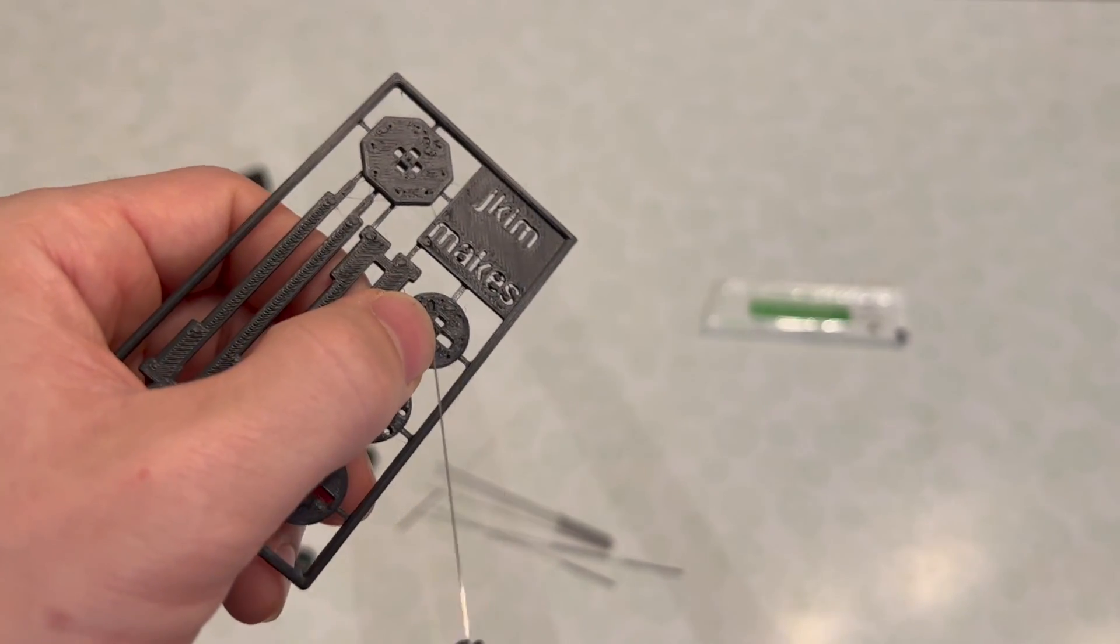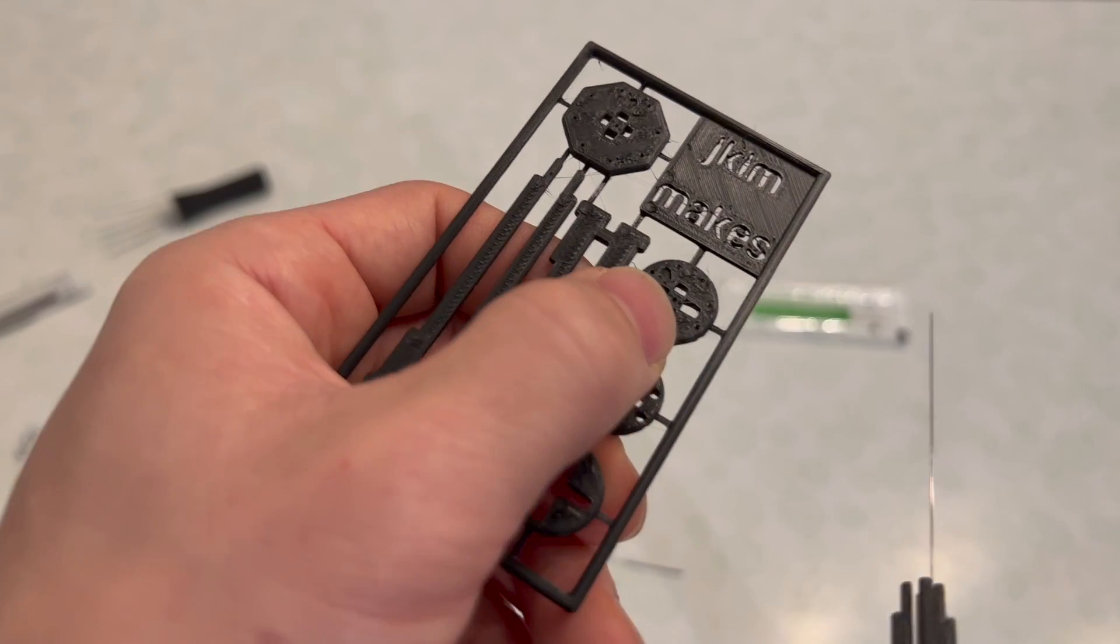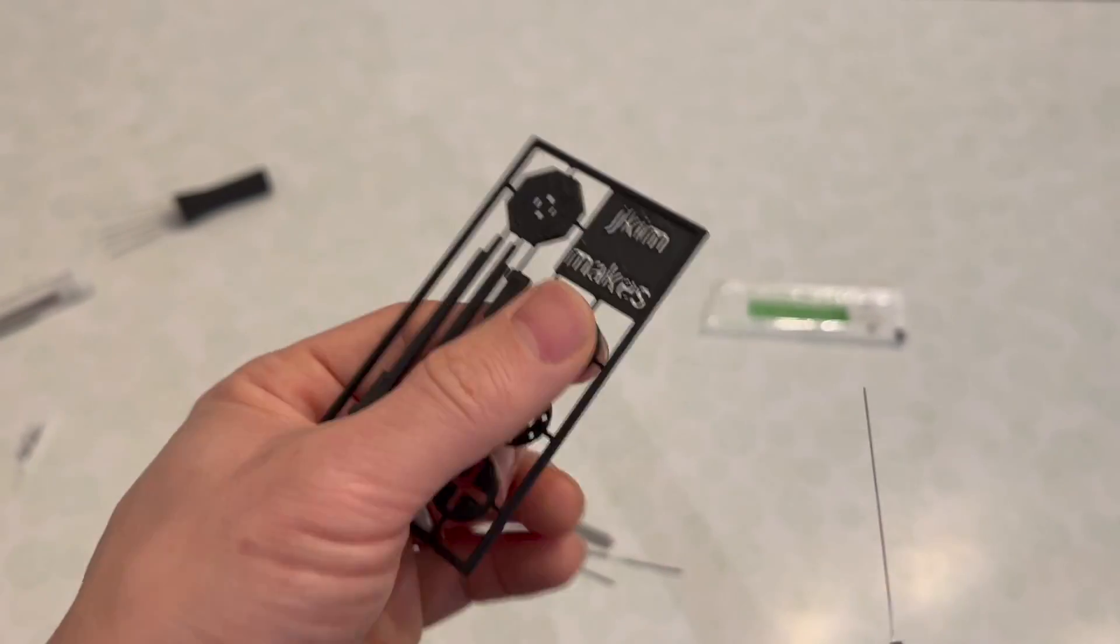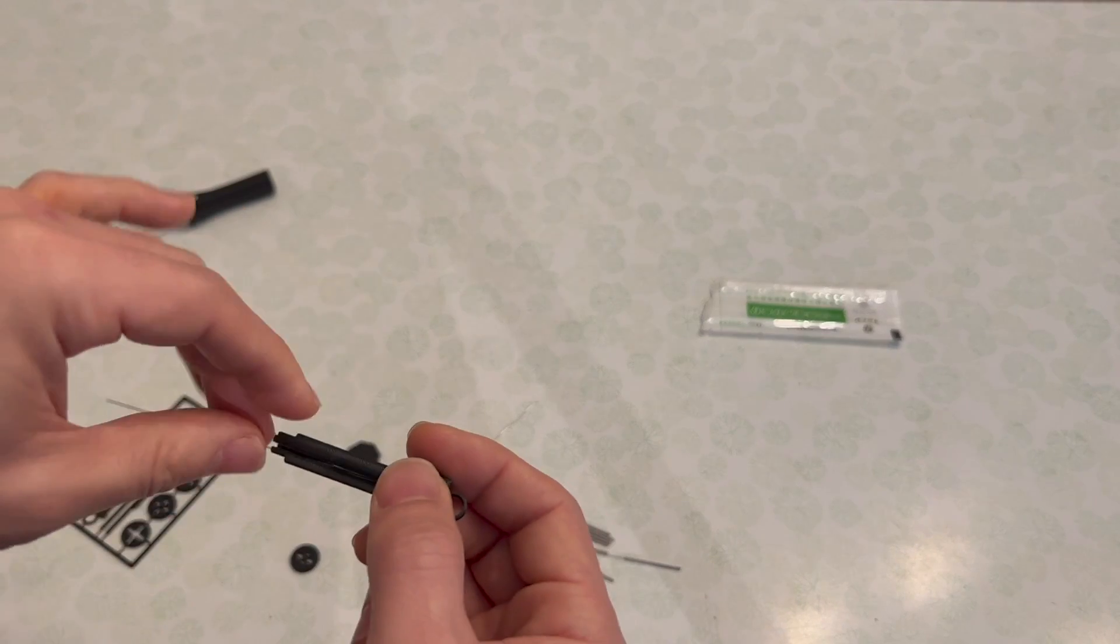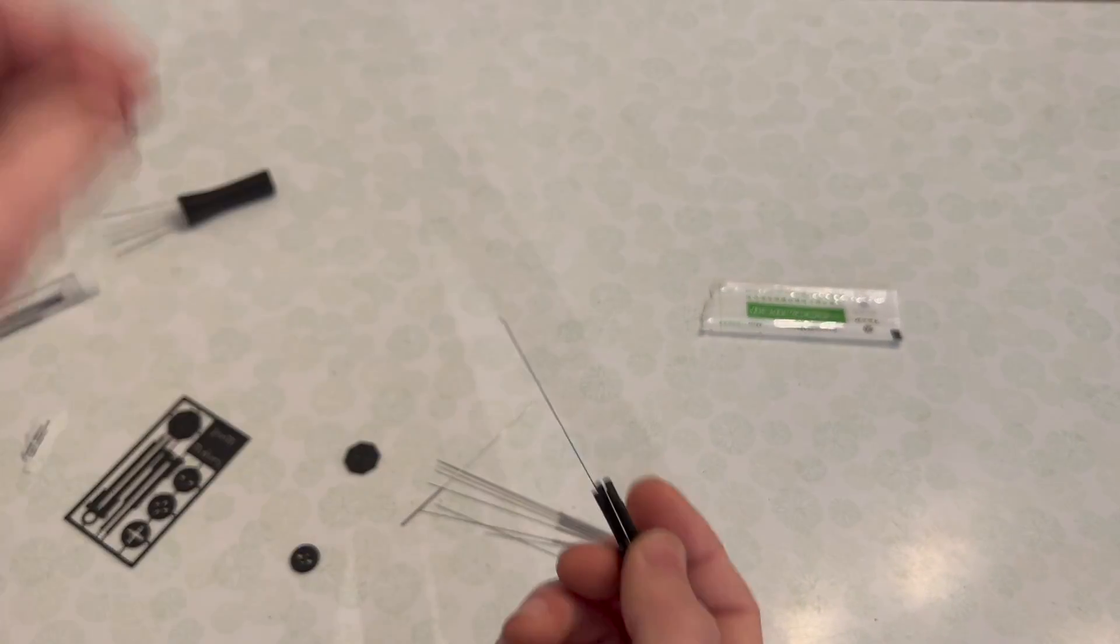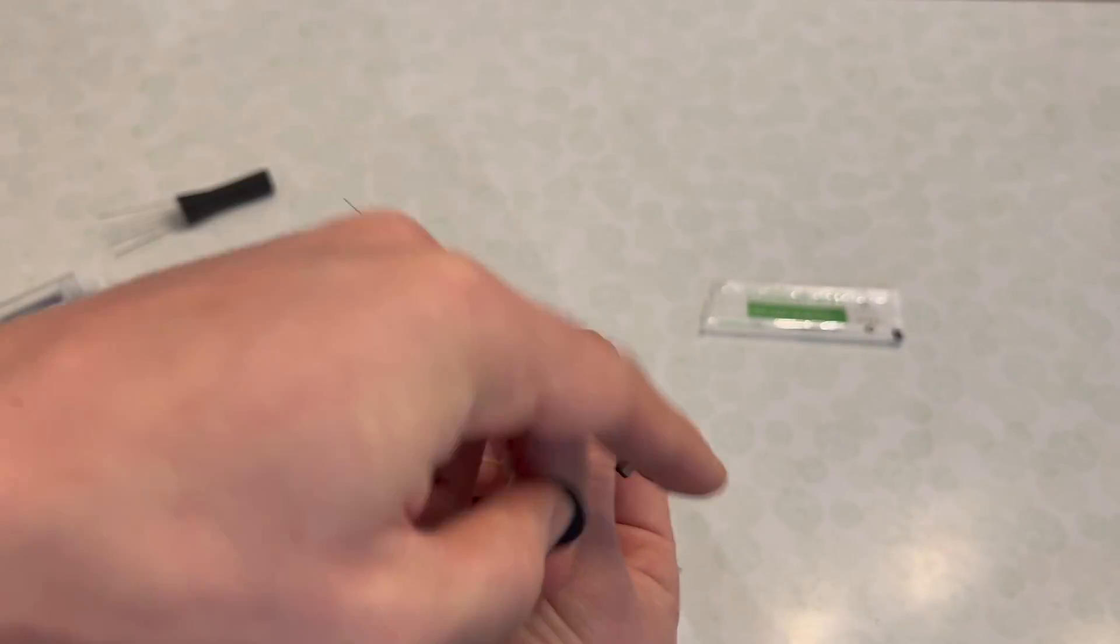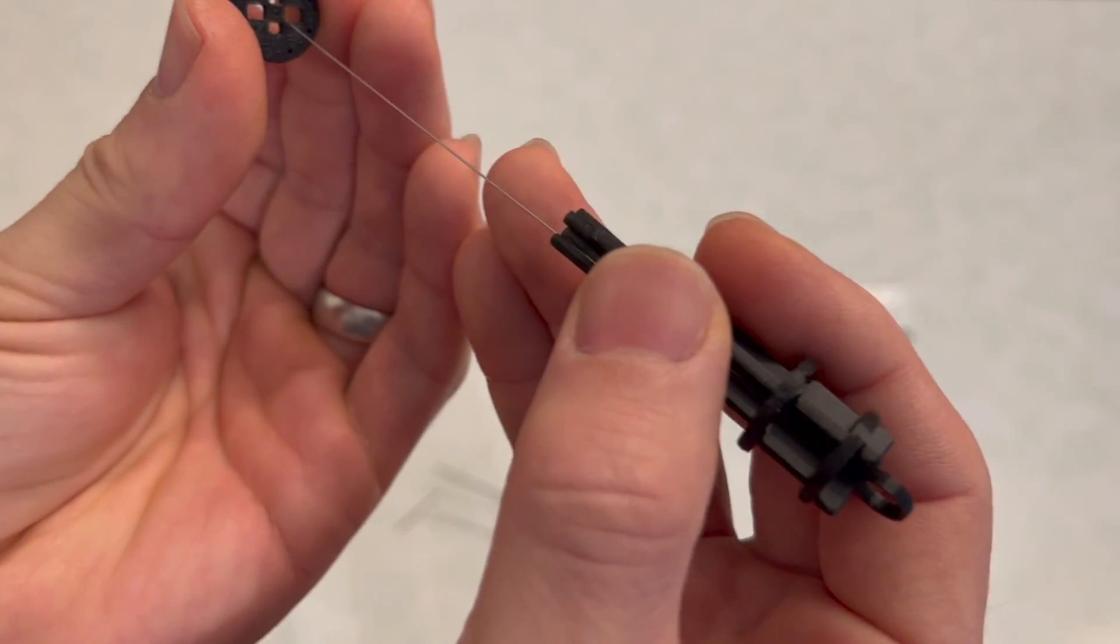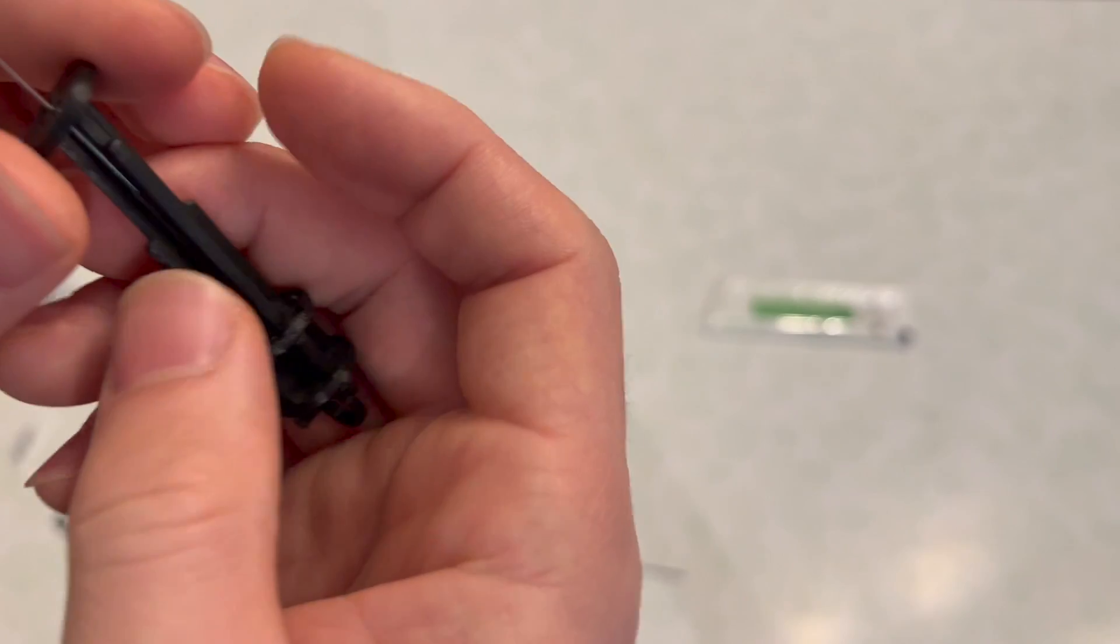You want the longer pieces here to line up with these bigger holes here. This piece is actually directional - you want the rough side up. There's an arrow - look carefully here, right there where my needle is pointing, there's an arrow. The rough side is the side you want facing up.